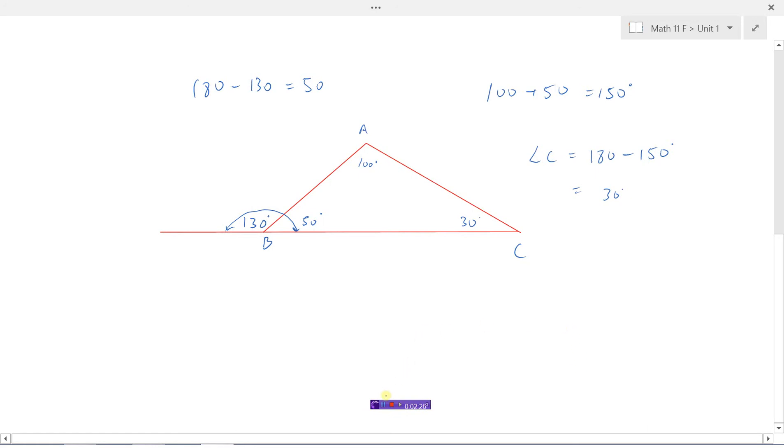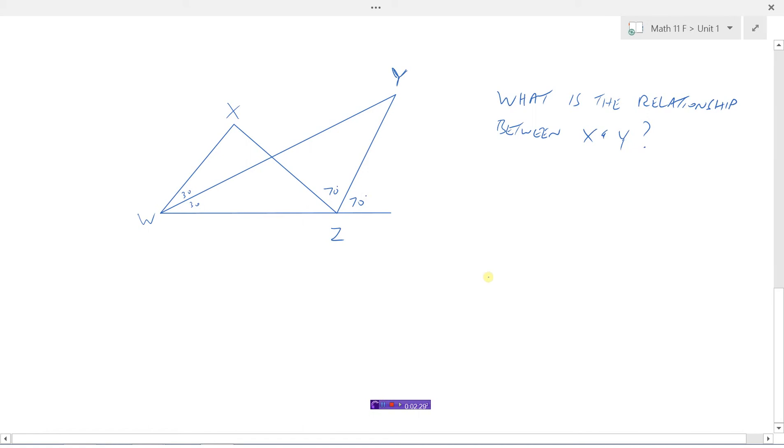Let's look at another example. So let's consider this example here. We've got a diagram here with a bunch of line segments and a few angles we know. We know that angle is 30, that angle is 30. So we would say that WY is a bisector of this angle here, X, Y, and Z. And then we also know that these two angles here are 70 each as well. And the question is, what's the relationship between X and Y? So we've got to find these two angles.